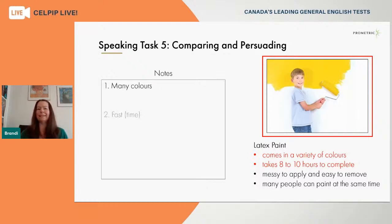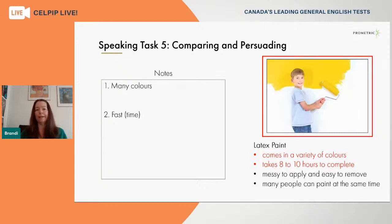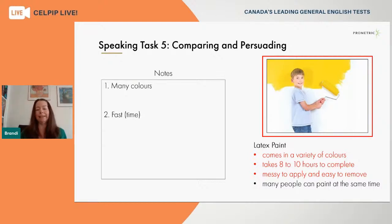During the 60 seconds of prep time, I'd encourage you to take quick notes. Looking at the latex paint option, the first bulleted point says 'comes in a variety of colors' — so on your notepaper, just write 'many colors.' The second option talks about eight to ten hours to complete this task. Think of a way to summarize that idea in your own vocabulary. If I'm trying to persuade the teacher, I'll emphasize that it will take no time at all and will be done very quickly.